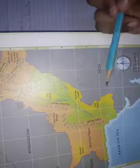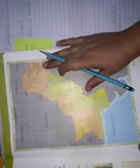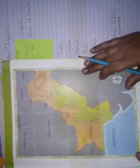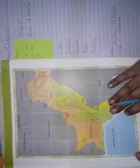Jehlam, Chanab, Rawi, Sutlej, and Kabul are the other main rivers of Pakistan — these are the tributaries of River Indus. We have now located them on our map. Let's read some of the information given in our textbook.